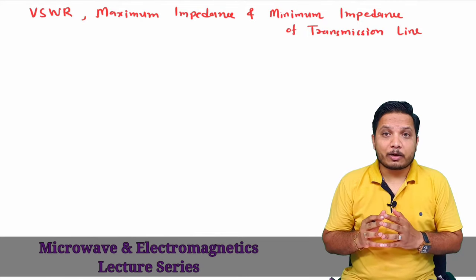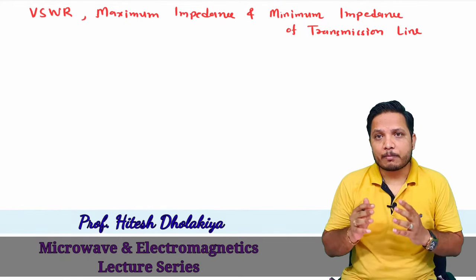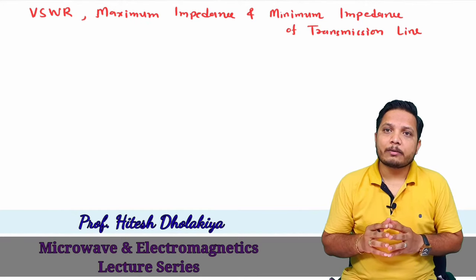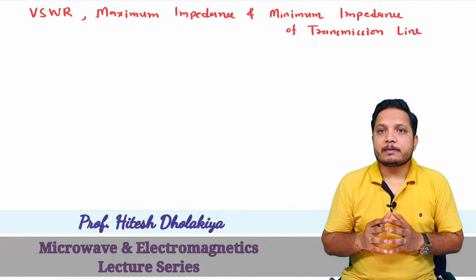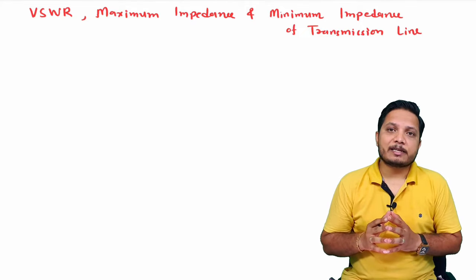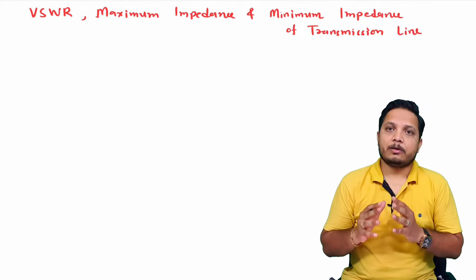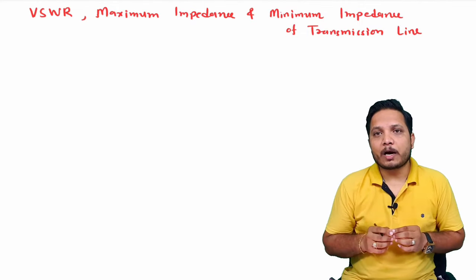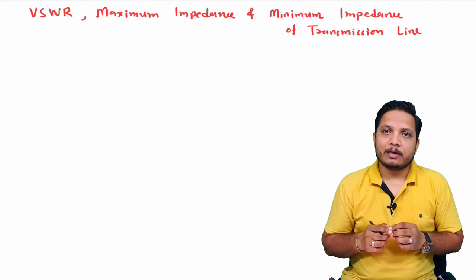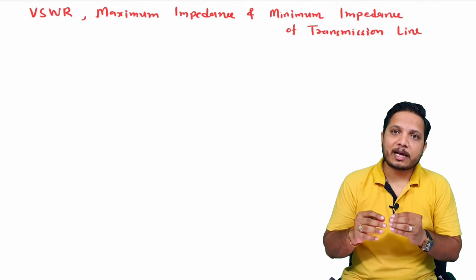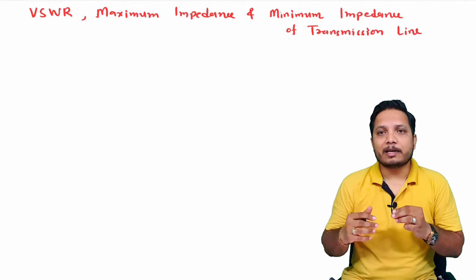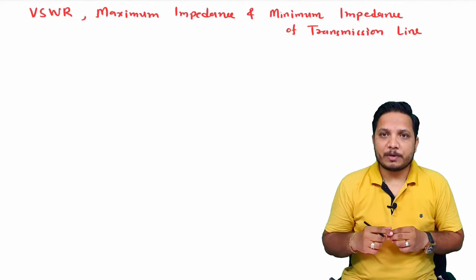Welcome to the microwave and electromagnetics lecture series. Professor Ritesh Dolakya is going to explain VSWR, maximum impedance, and minimum impedance of a transmission line in this video. Let us start with VSWR of transmission line. To understand VSWR, one should have a basic idea about the voltage equation of transmission line, which we have already derived in the previous video.